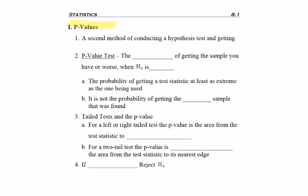Now we're going to look at p-values. P-values is just another method for conducting a hypothesis test and getting the same result. All a p-value is is getting the same answer, but instead of using a critical value, you're using this other method.